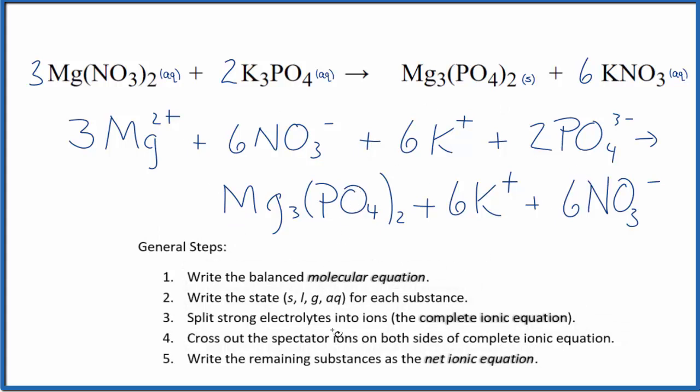Now we can cross out spectator ions. They're on both sides of the complete ionic equation. For example, up top, we have the reactants here. In the reactants, we have six nitrate ions. In the products, we have six nitrate ions, spectator ions. We cross those out.